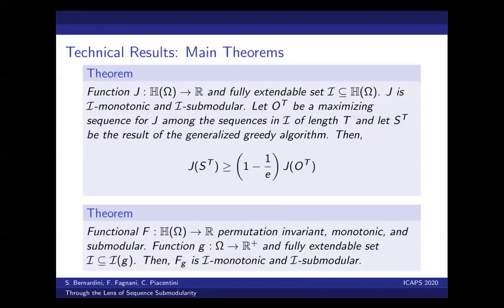Now we are ready to state the main results of our work. If we have a fully extendable set i and we consider a functional j that is i monotonic and i submodular, the maximization of the functional through our generalized greedy approach produces almost optimal solutions. And the second fundamental result is that the functional Fg is both i monotonic and i submodular, and so the generalized greedy approach works very well on it.